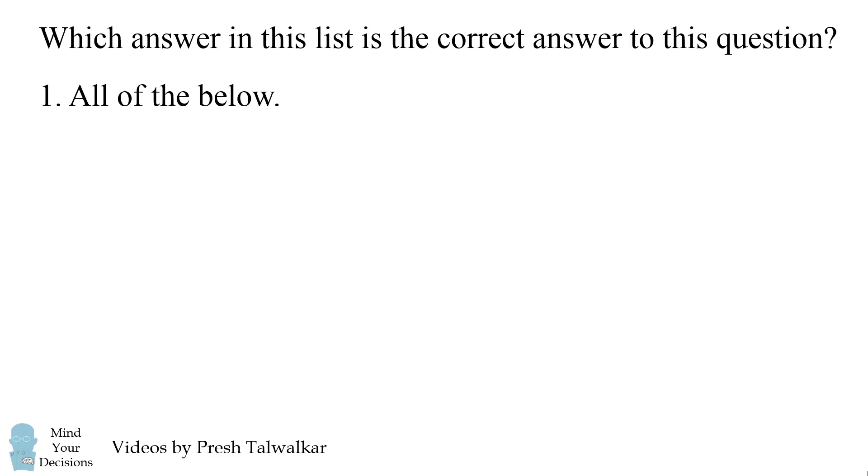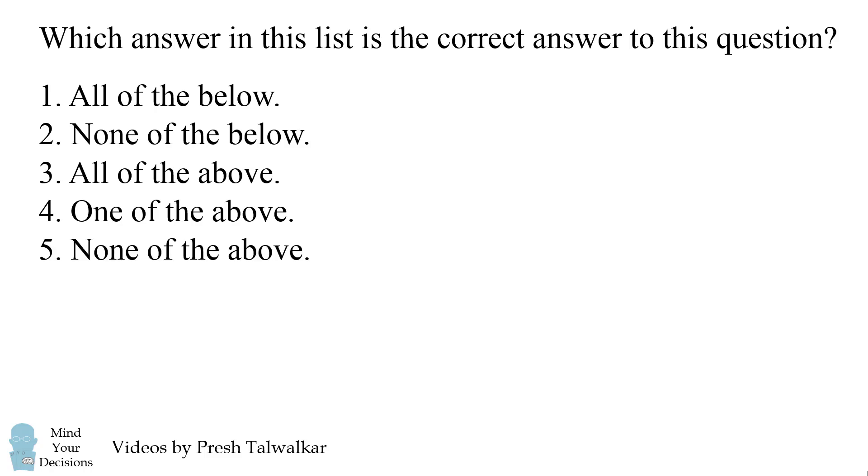Which answer in this list is the correct answer to this question? Number one, all of the below. Number two, none of the below. Number three, all of the above. Number four, one of the above. Number five, none of the above. Number six, none of the above.